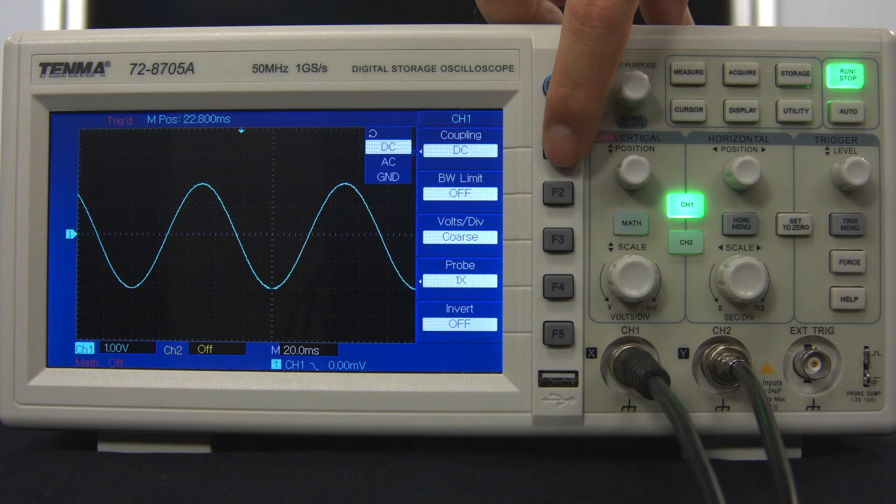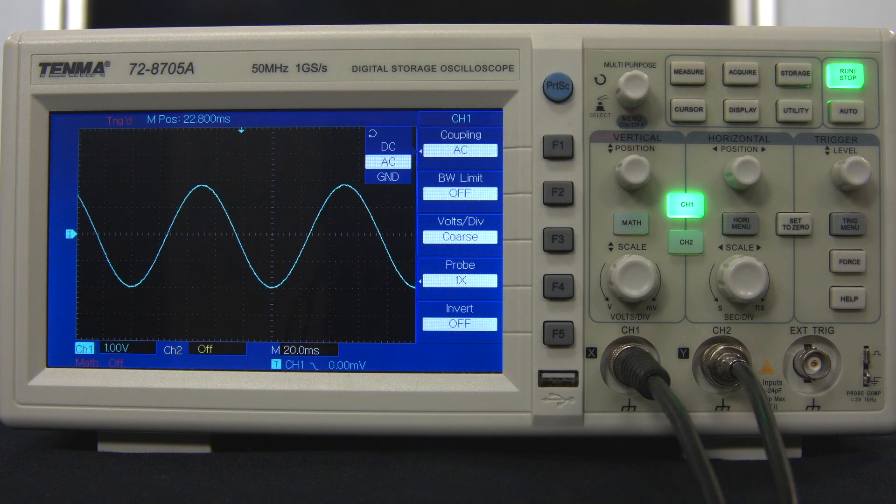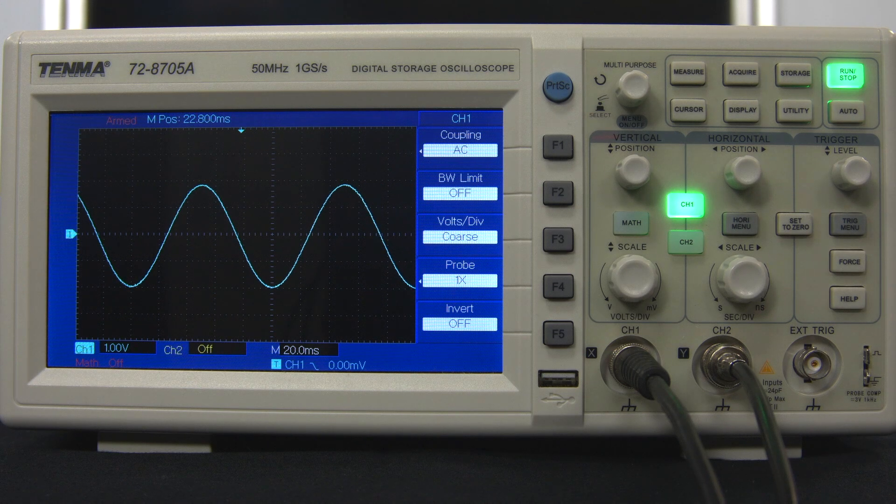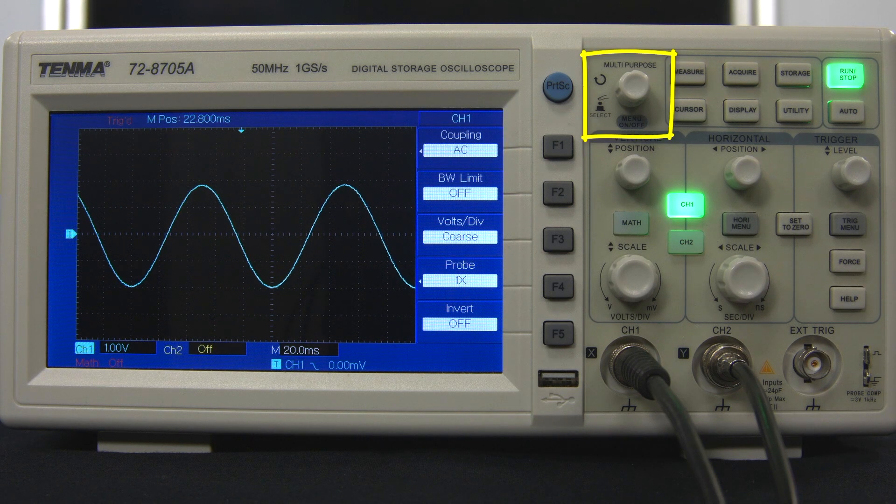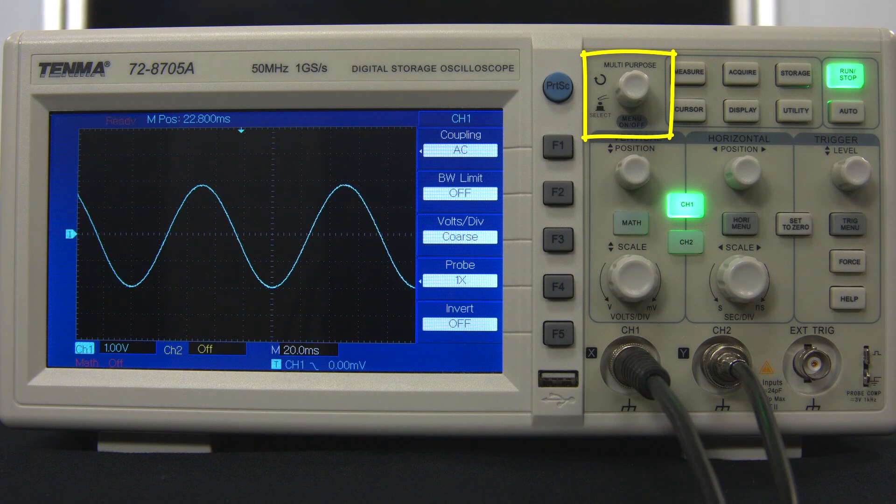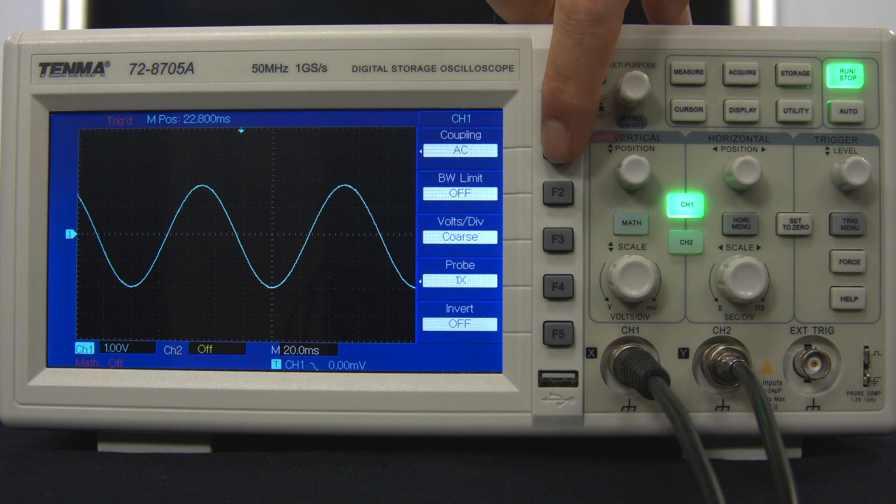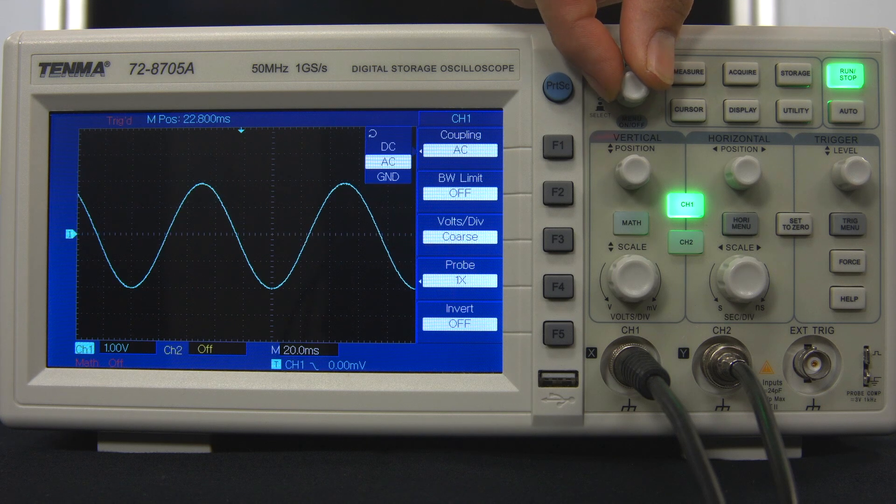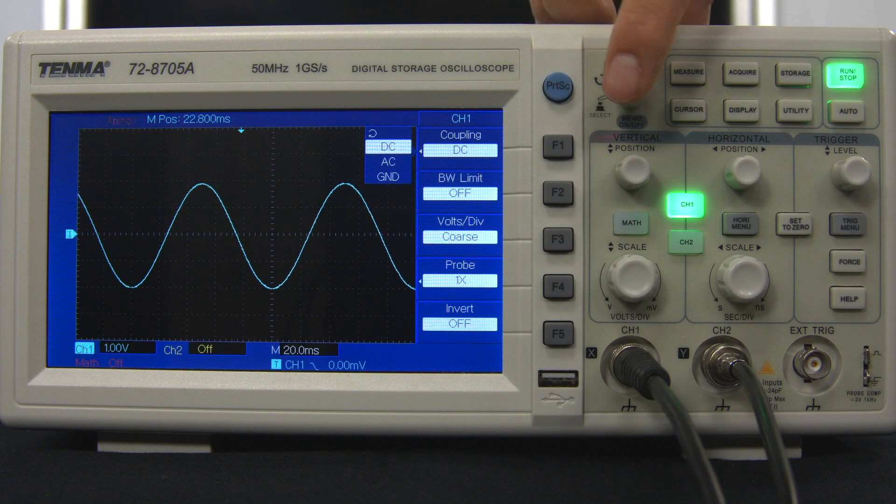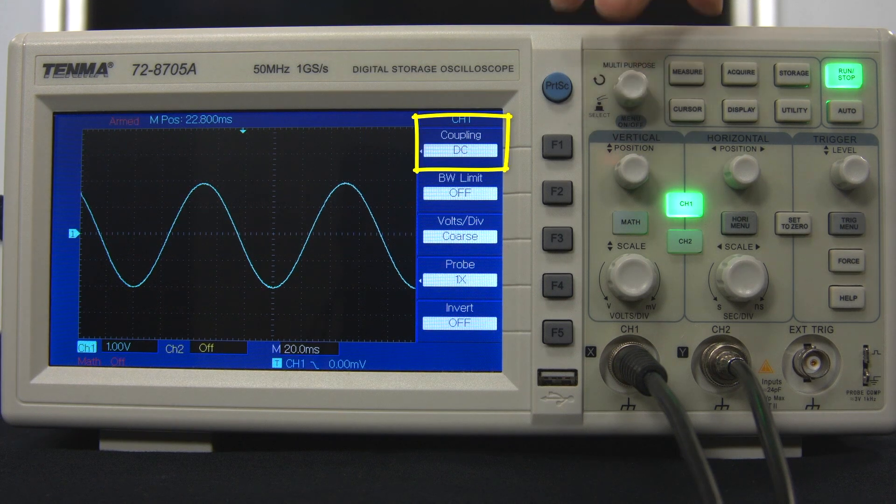In this case, a submenu of options appears. Continuing to press the F1 button scrolls through this submenu, and waiting a few seconds allows the selected option to become active. In this case, the coupling has been changed to AC. Another way to use the submenus is with the multipurpose knob at the top of the control section. Once the submenu is visible, turning the multipurpose knob scrolls through the options. Rather than wait a few seconds, the desired selection can be chosen by pressing the multipurpose knob. In this case, coupling has been changed back to DC.